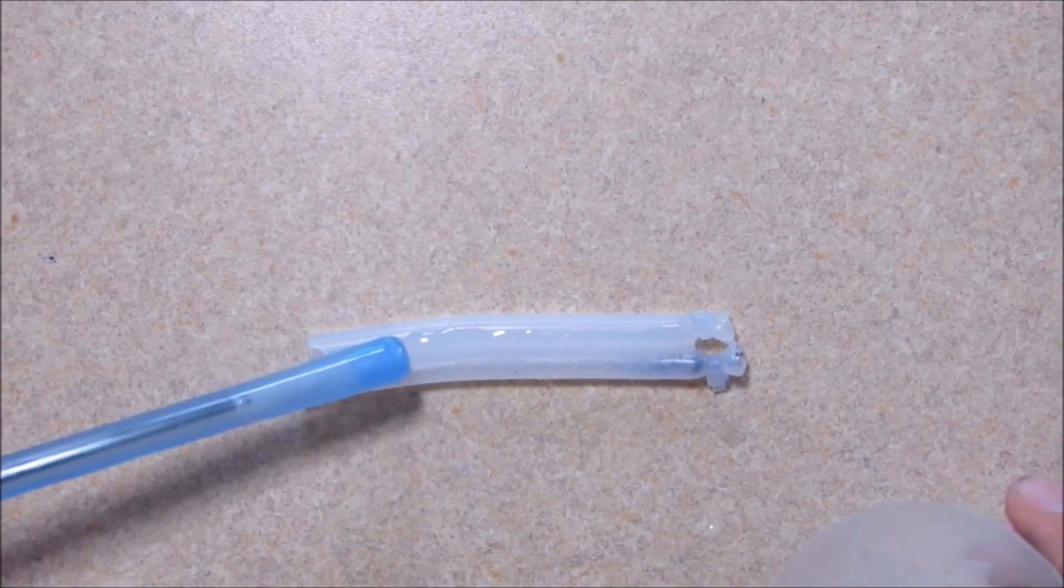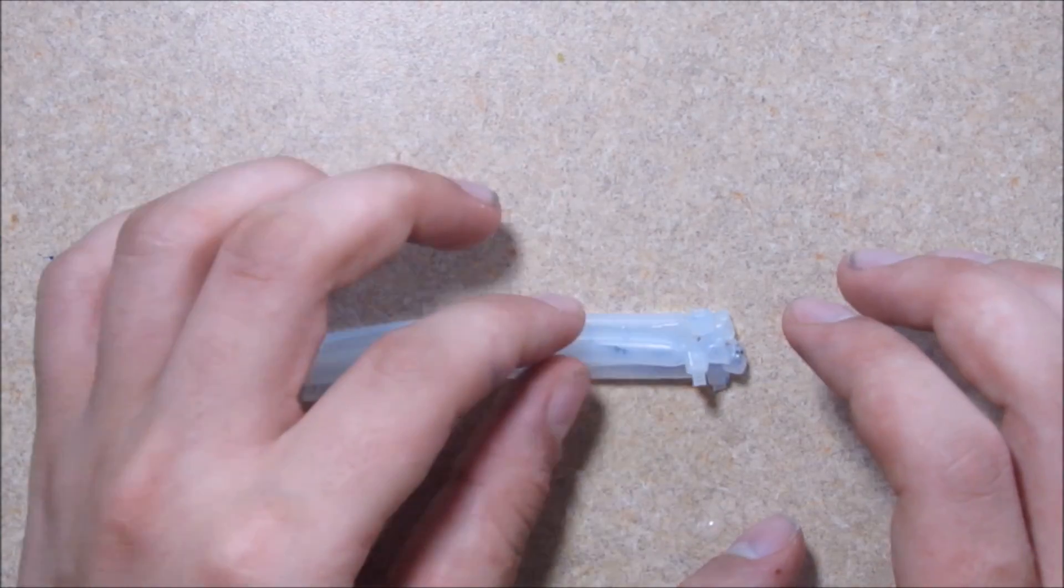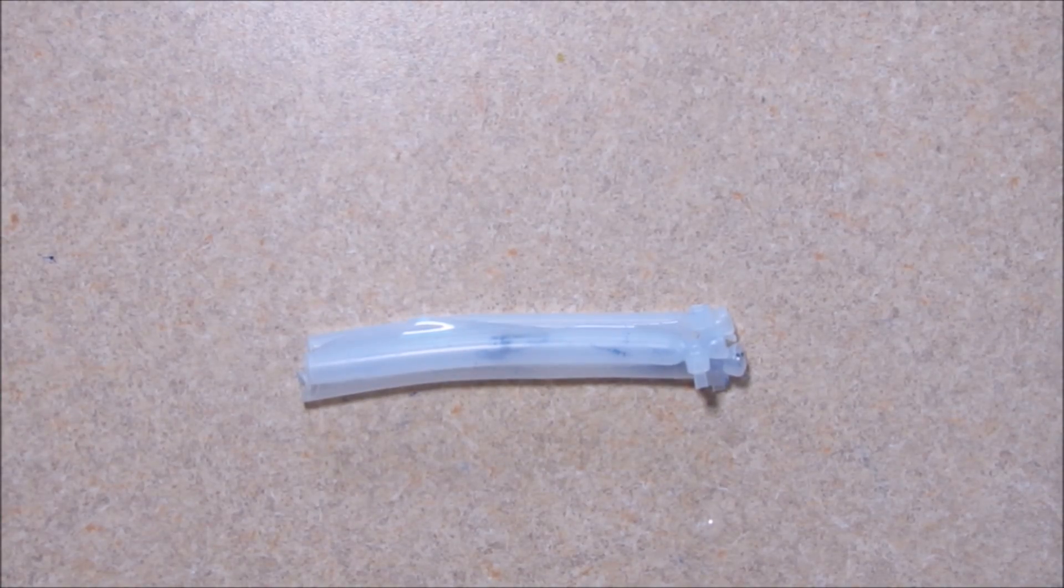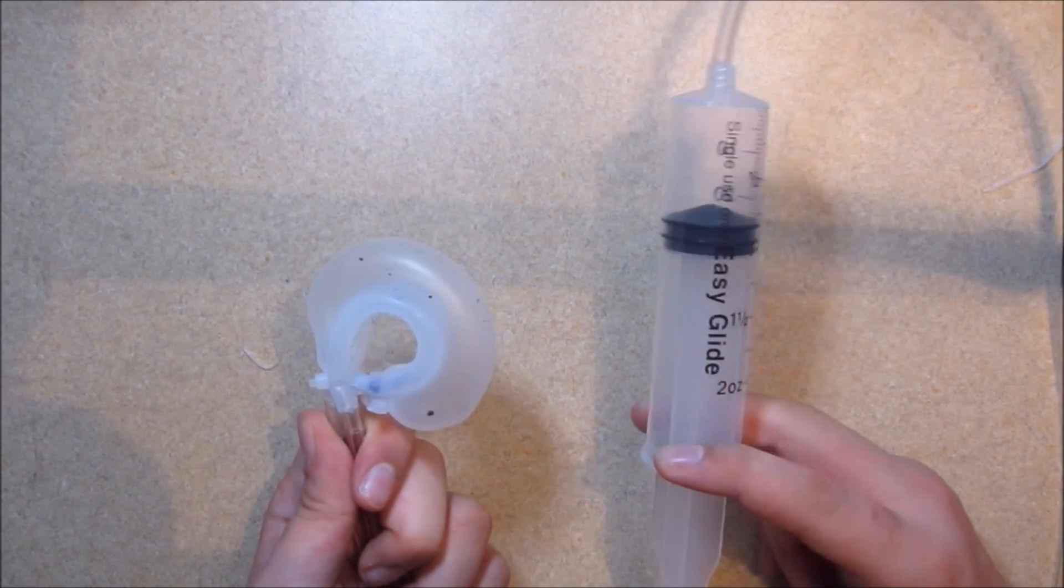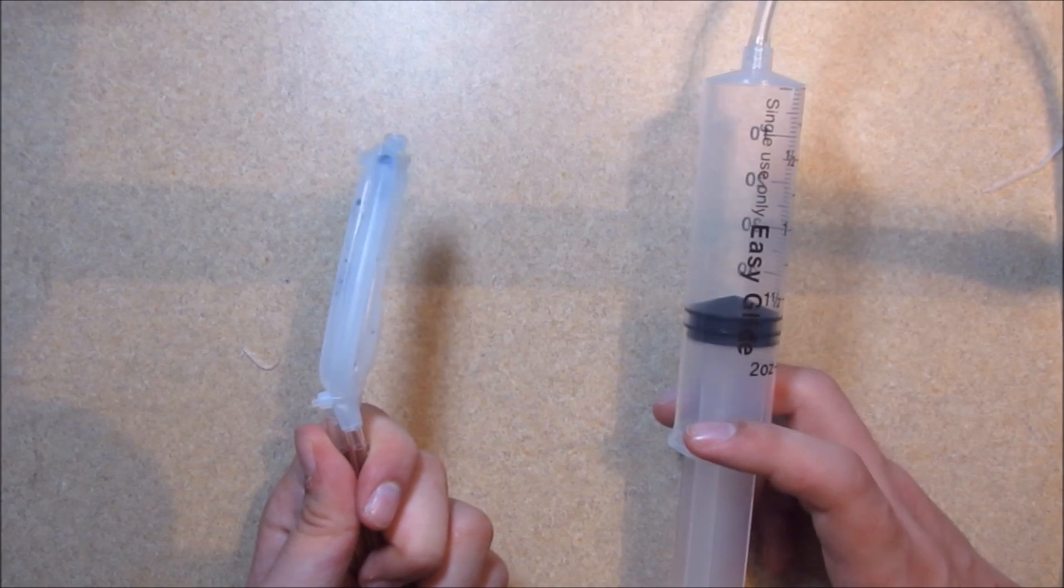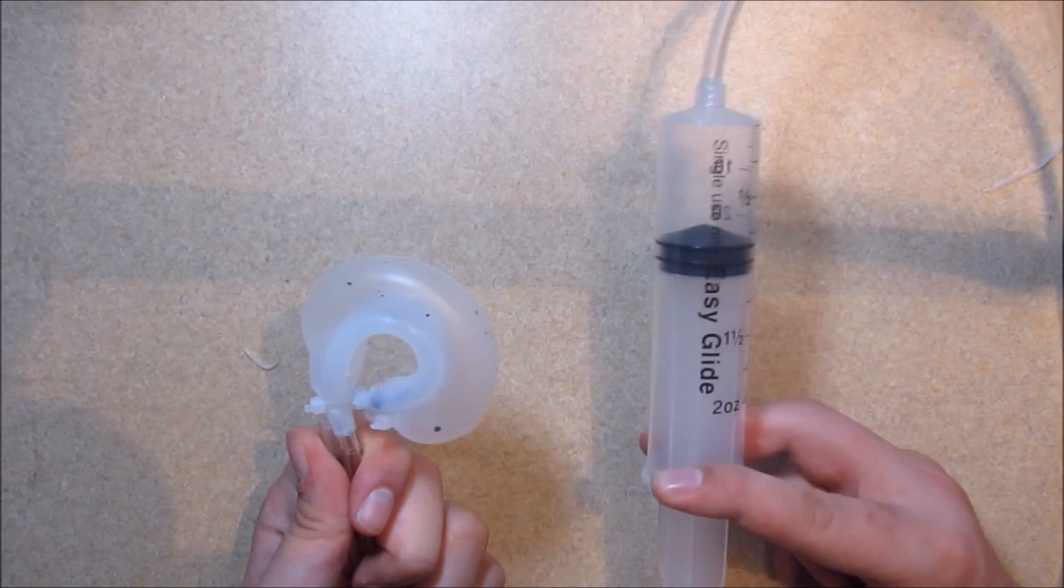To assemble the tentacle, bond 3 actuators together with more Ecoflex. After the rubber has cured, connect each actuator to an air source. I use 60 ml plastic syringes.